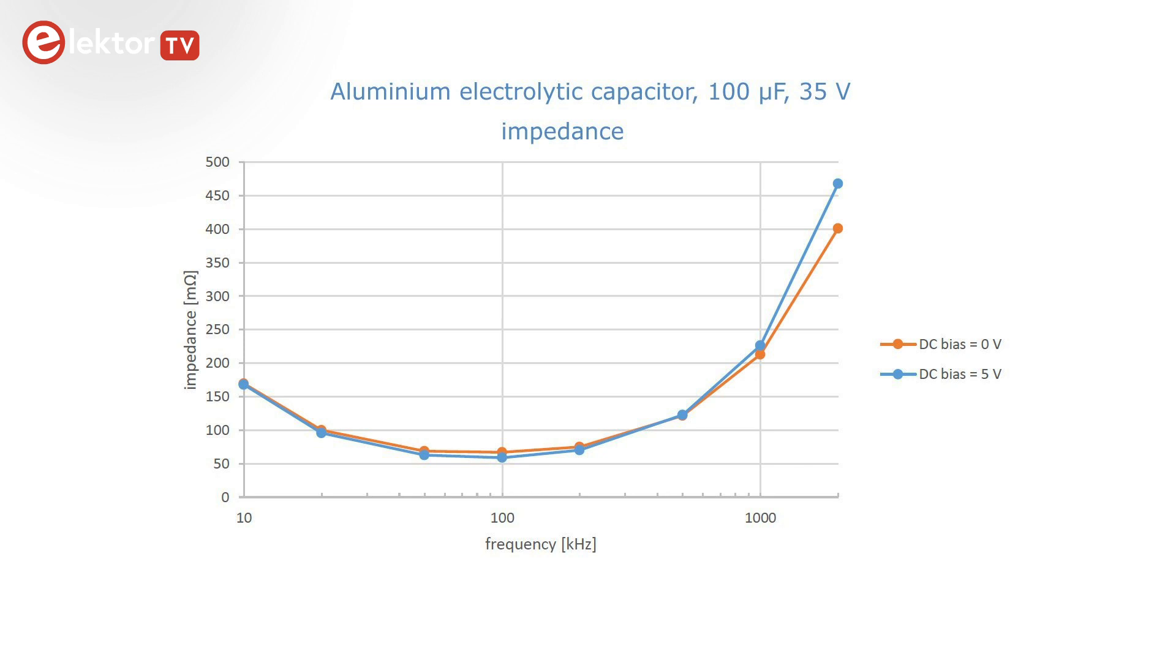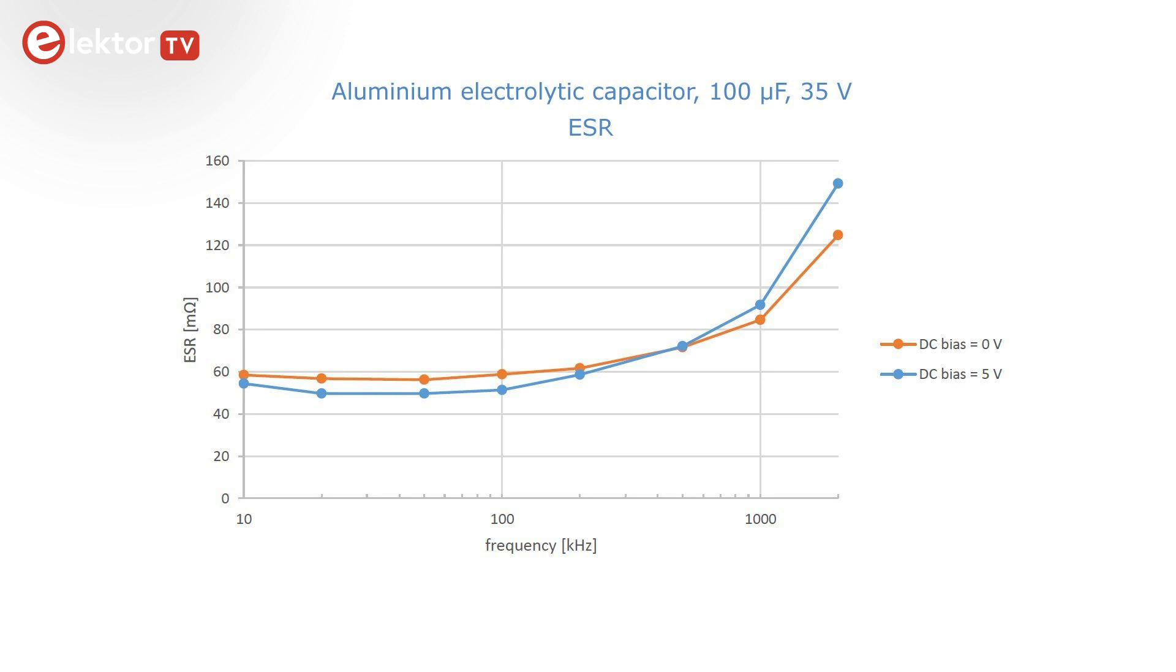The impedance graph shows a minimum value at 100kHz of about 55mΩ, which is as specified in the datasheet. The impedance increases as the device becomes inductive. The ESR value is at the specified value up to around 100kHz and then starts to increase.